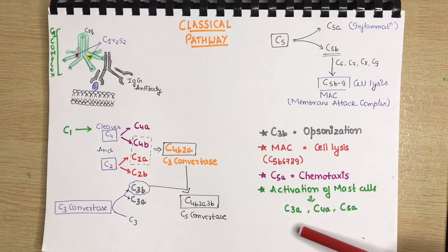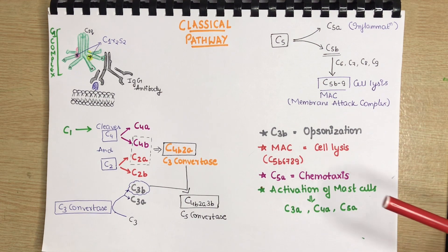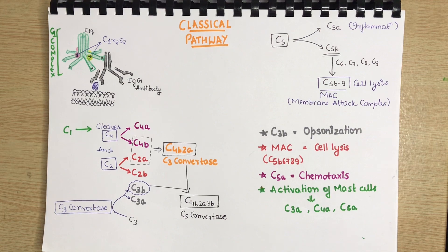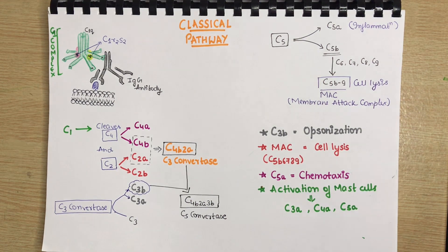So, basically, C3A, C4A and C5A, they are helping in release of histamines and serotonin which causes the inflammation. I hope the classical pathway is clear to you. If you have any questions, please comment down below and I will try to answer them. In next videos, I will be explaining alternative pathway and lectin pathway. Thank you so much.